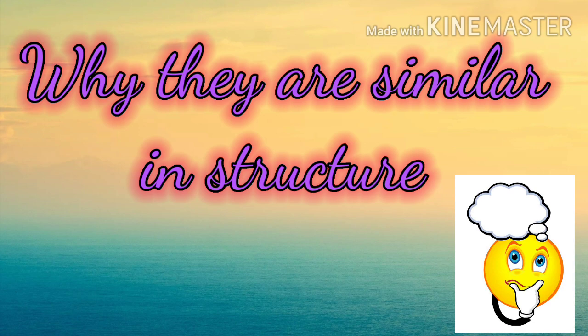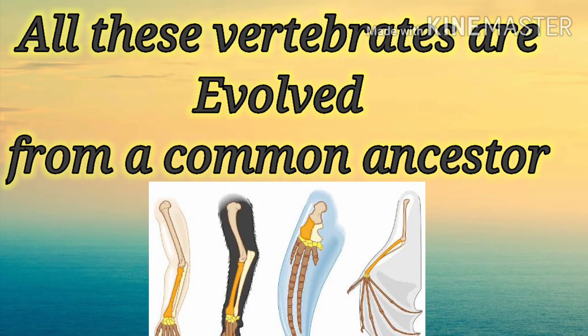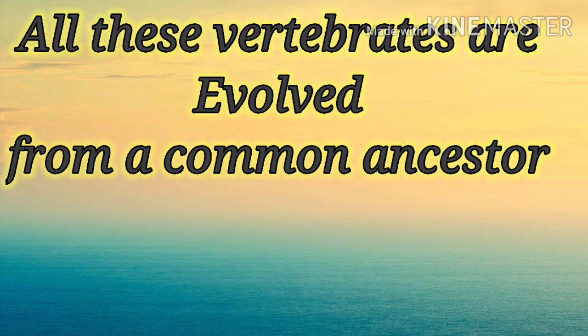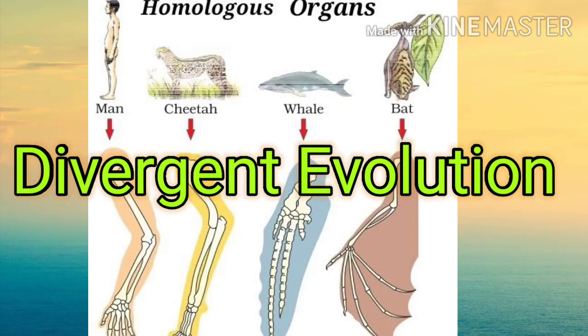But why are they similar in structure? All these vertebrates are evolved from a common ancestor. This type of evolution is called divergent evolution.